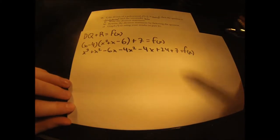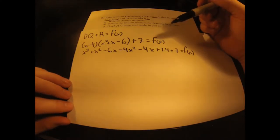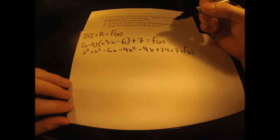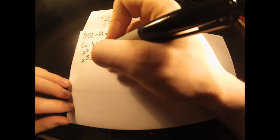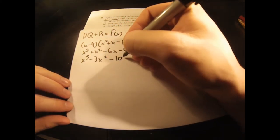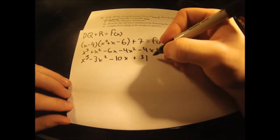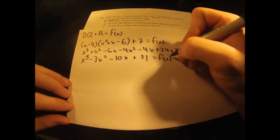Now we are just going to simplify this down by collecting like terms, and that will give us our final answer of f(x). This simplifies down to x cubed minus 3x squared minus 10x plus 31, all equal to f(x) — our original function.